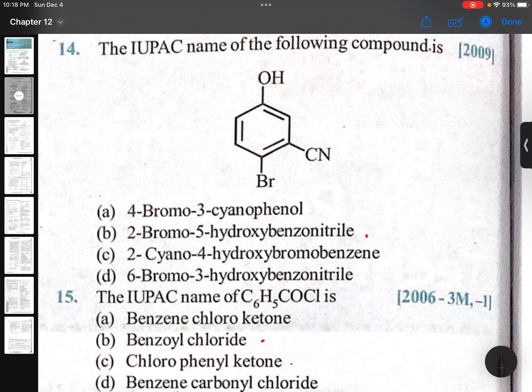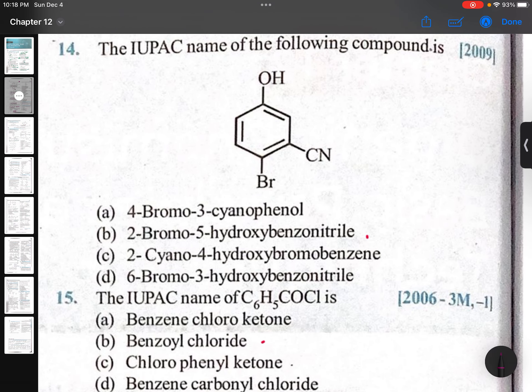The IUPAC name of the following compound. These 2009 questions - there is no need to see, actually, to be frank. Here cyanide gets more priority, clearly. So first place, second place, third, fourth, fifth, and sixth. It should be 2-bromo-5-hydroxy-benzonitrile, or you can say benzene carbonitrile - the more perfect name.